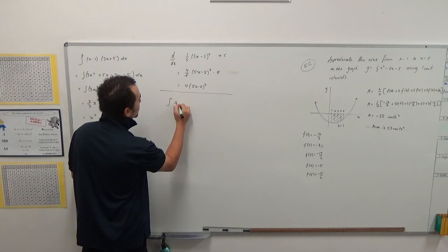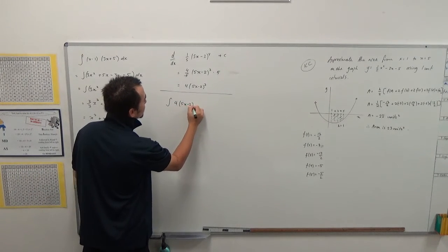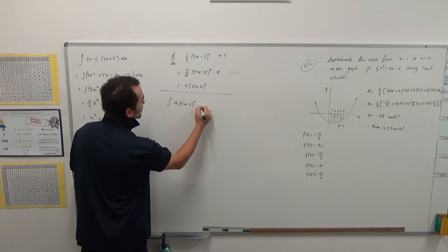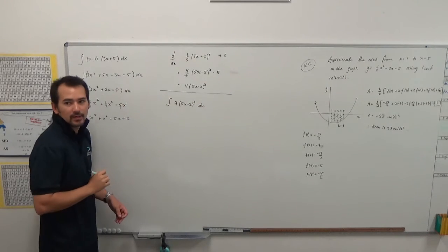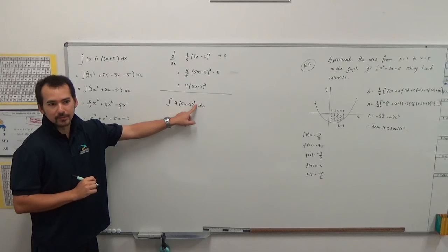So if we're going to integrate 4 times 5x minus 2 to the power of 3 dx. First thing is, we're going to raise the power, divide by the power.